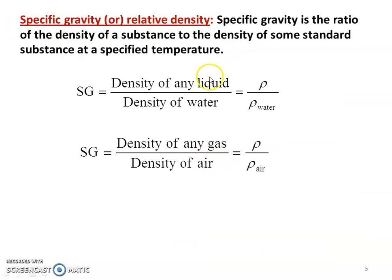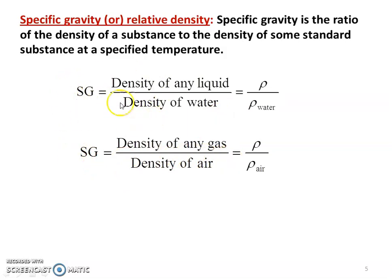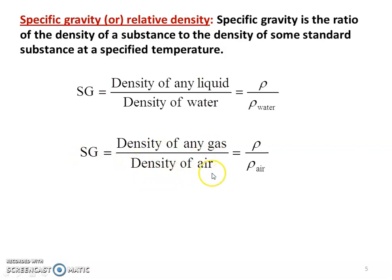Specific gravity, or relative density, is the ratio of the density of a substance to the density of a standard substance. For liquid substances, the standard fluid is water: Sg = ρ / ρ_water. For gaseous substances, the standard fluid is air: Sg = ρ / ρ_air.